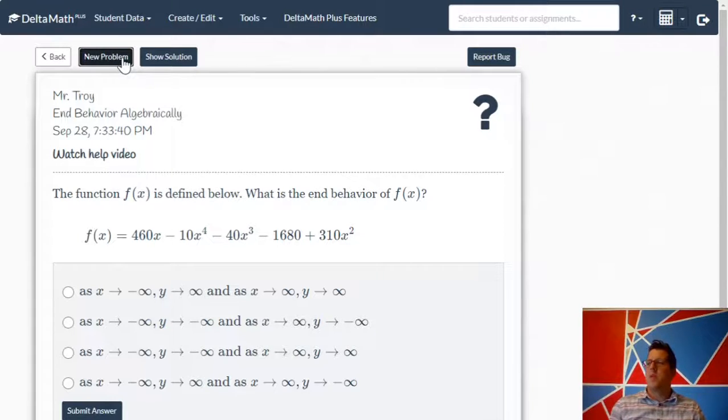I had to click through for a little bit, but I found one that was different. The function f(x) is defined below. What is the end behavior? So I've got a highest power of four. So my ends are going to point in the same direction. So I'm looking for something that's either infinity infinity or negative infinity negative infinity. I don't want opposites here.